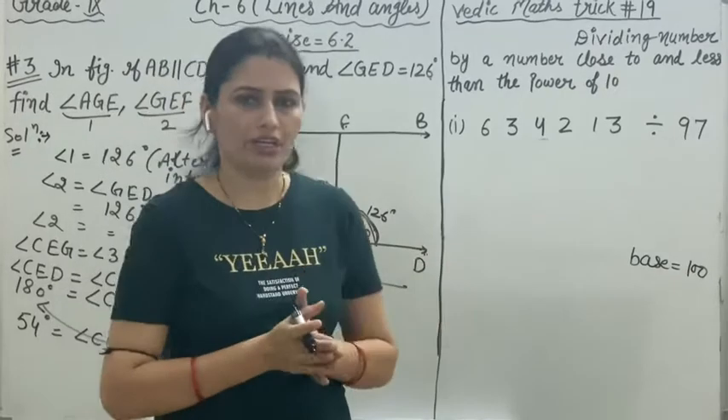Here, base is 100 because 97 is very close to 100. So base is 100. Second step is derivation. Derivation is the difference between the base and the divisor, that is 3. In the same way, first we divide this number into 2 parts. Here, we have two zeros in 100. So last two digits you skip, and remaining is the first part.